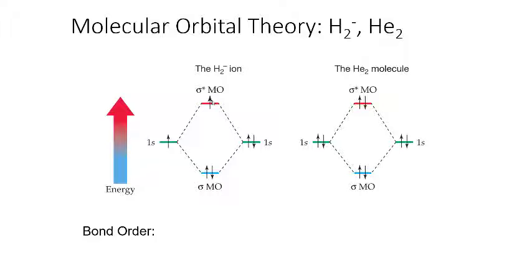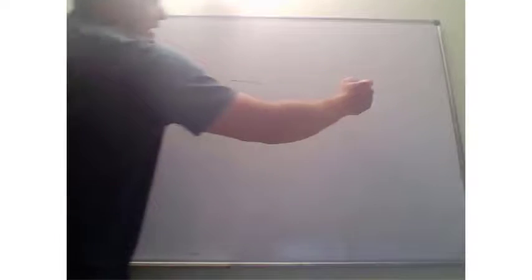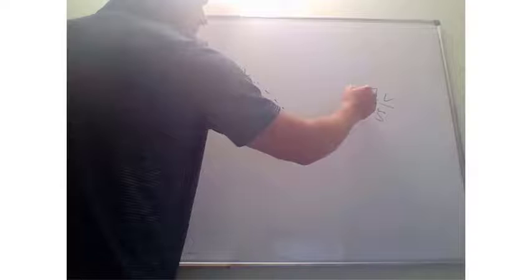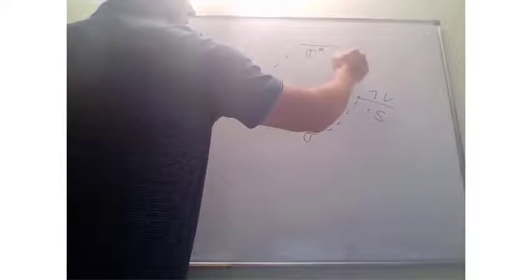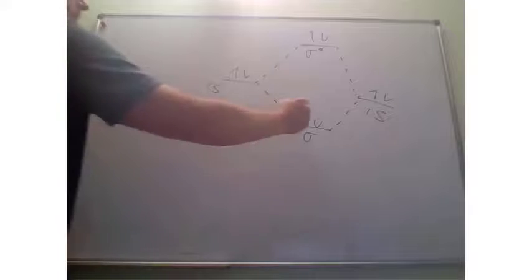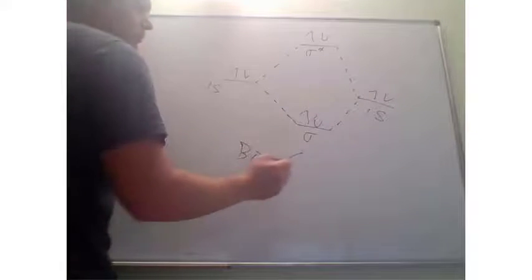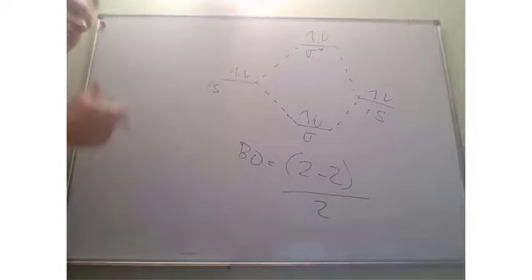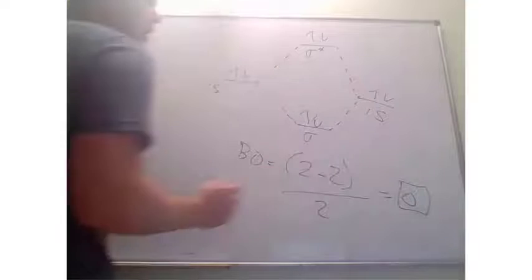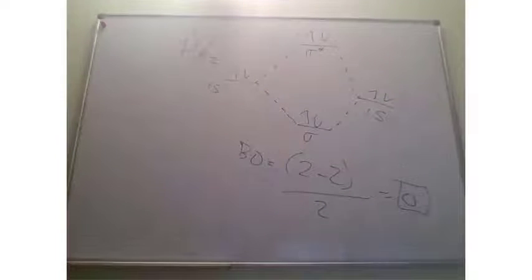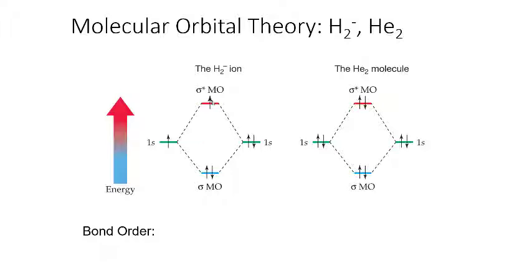For diatomic helium, each helium has two electrons in the 1s orbital, giving four total electrons. These form sigma bonding and sigma-star antibonding orbitals, filled one through four from low to high energy. Bond order equals (2 minus 2) divided by 2, which equals zero. A bond order of zero means diatomic helium cannot form. Only bond order values of one, two, or three are allowed to form actual bonds.